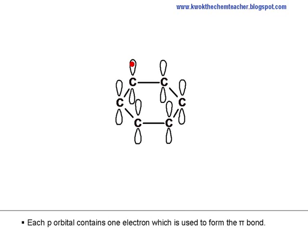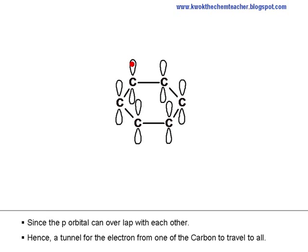Each p-orbital contains one electron which is used to form the pi bond. Since the p-orbital can overlap with each other, hence a tunnel for the electron from one of the carbon to travel to all.